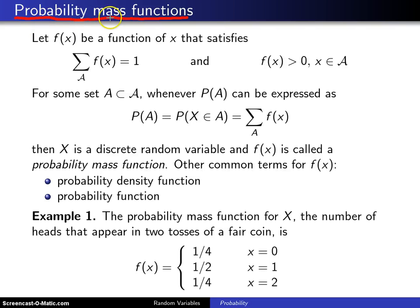So let's start with probability mass functions. Let f(x) be a function of x that satisfies the following. First of all, if you sum f(x) over the values in the support of the random variable x, you get 1. And second of all, if you look at any x value in the support, then f(x) will be greater than 0.